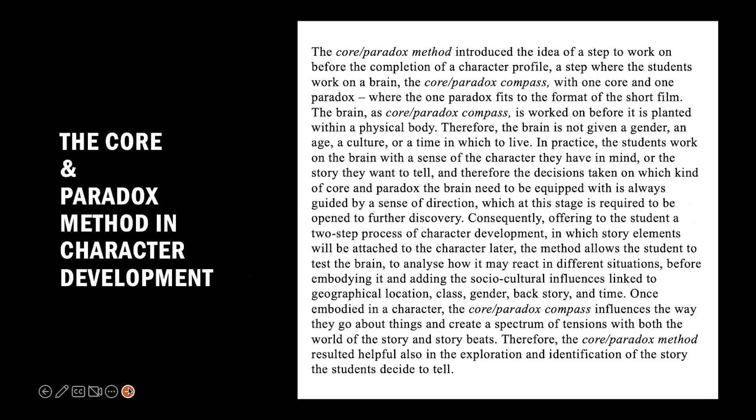So, what is this Core and Paradox Method? The Core and Paradox Method introduces the idea of a step to work on before the completion of a character profile — a step where the students work on a brain, the Core Paradox compass, with one core and one paradox, where the one paradox fits the format of the short film. The brain, as Core Paradox compass, is worked on before it is planted within a physical body. Therefore, the brain is not given a gender, an age, a culture, or a time in which to live.